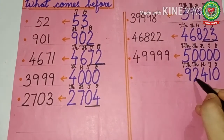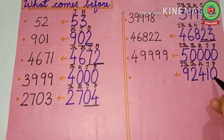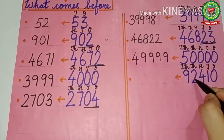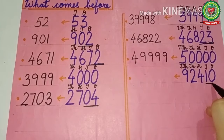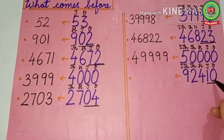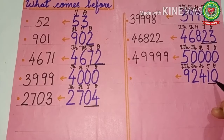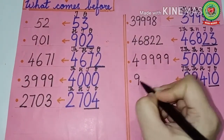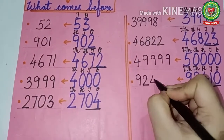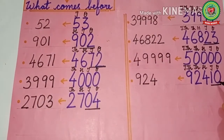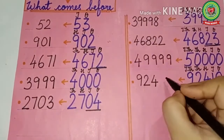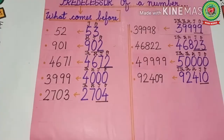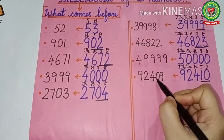Next number is 92,410. I have written the place value table. Again, ones and tens place together — what comes before 10? That is 9. All the other place values will remain the same — that is 92,400. Before 10 is 9, so we write 9 at the ones place and 0 at the tens place. The predecessor is 92,409.